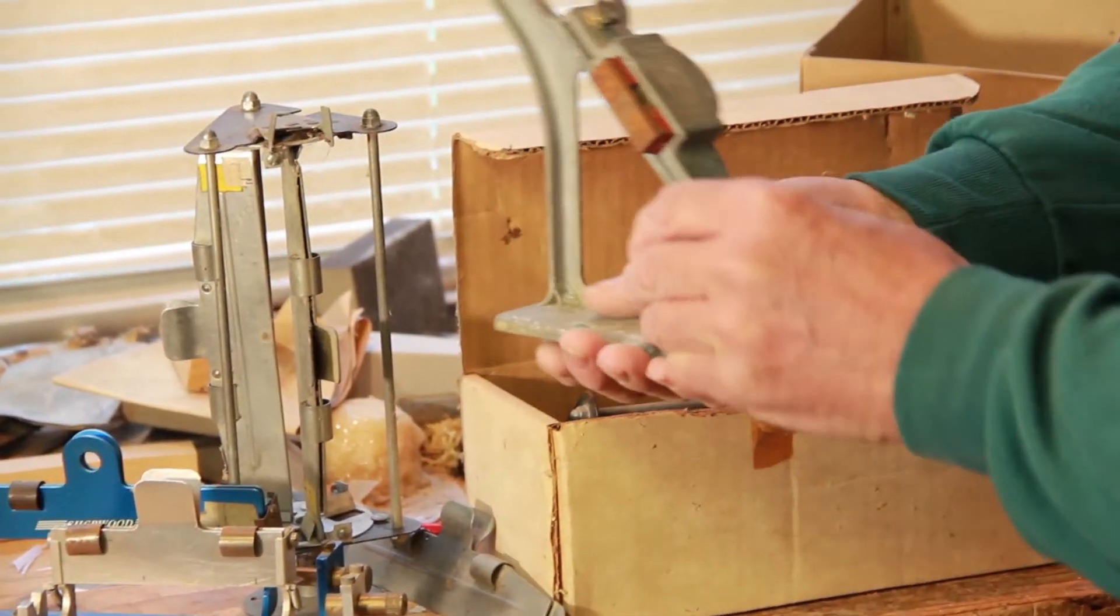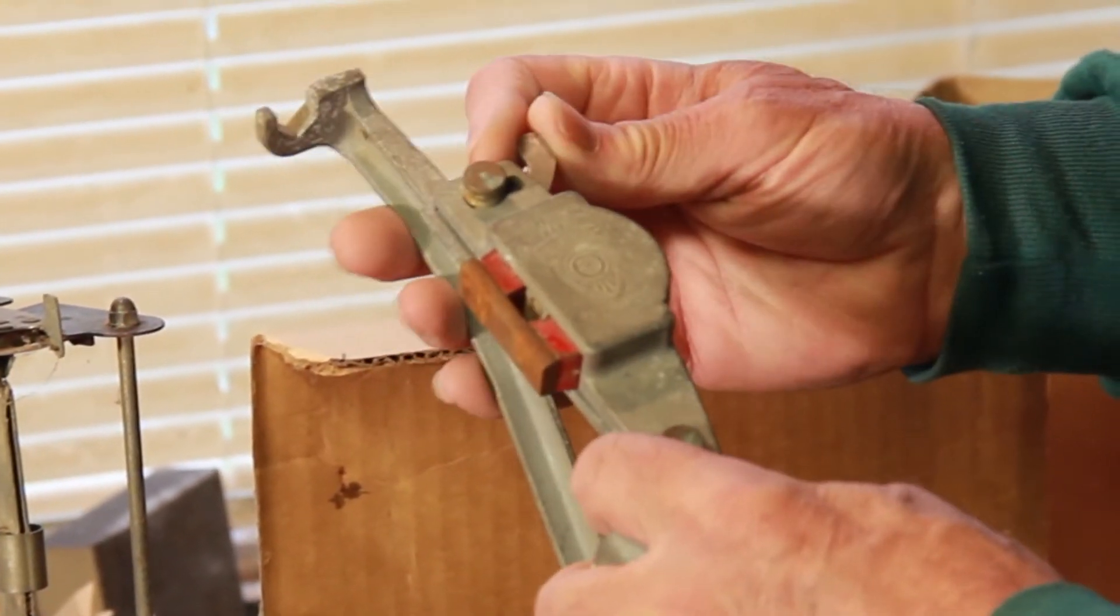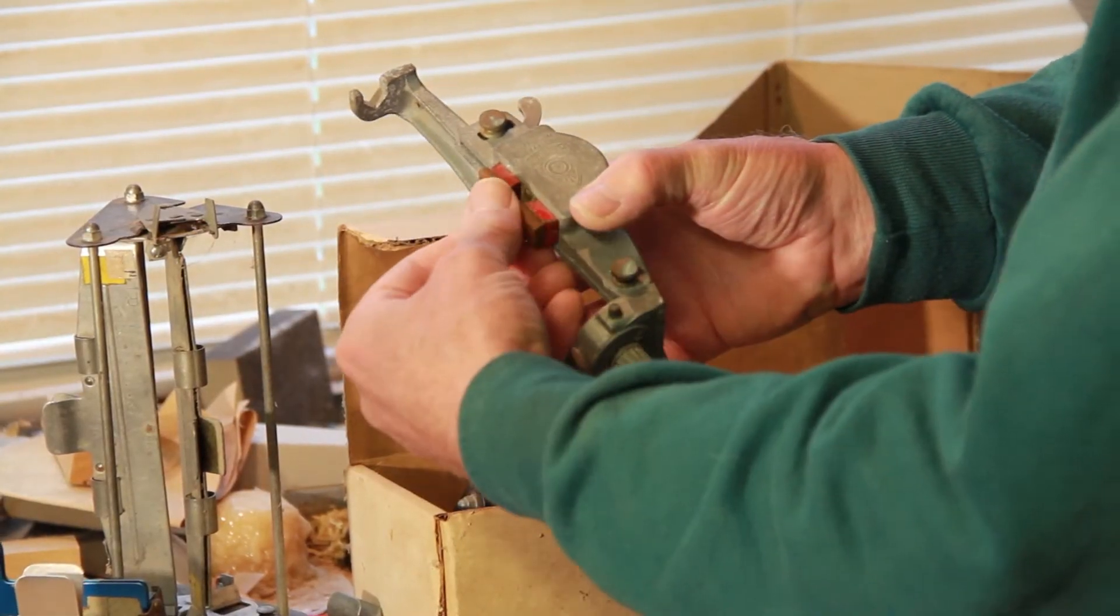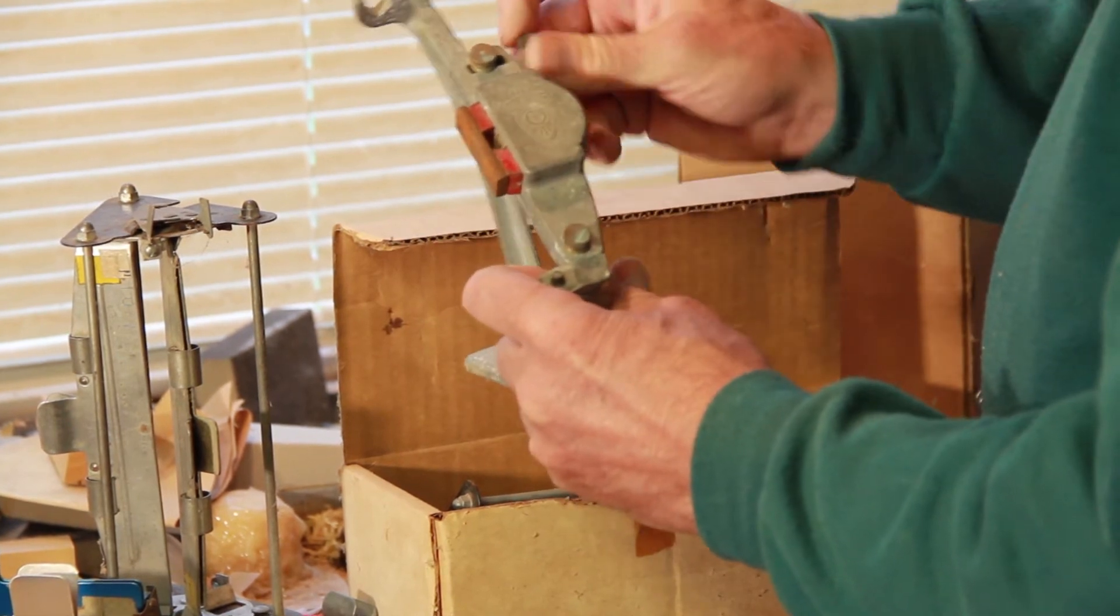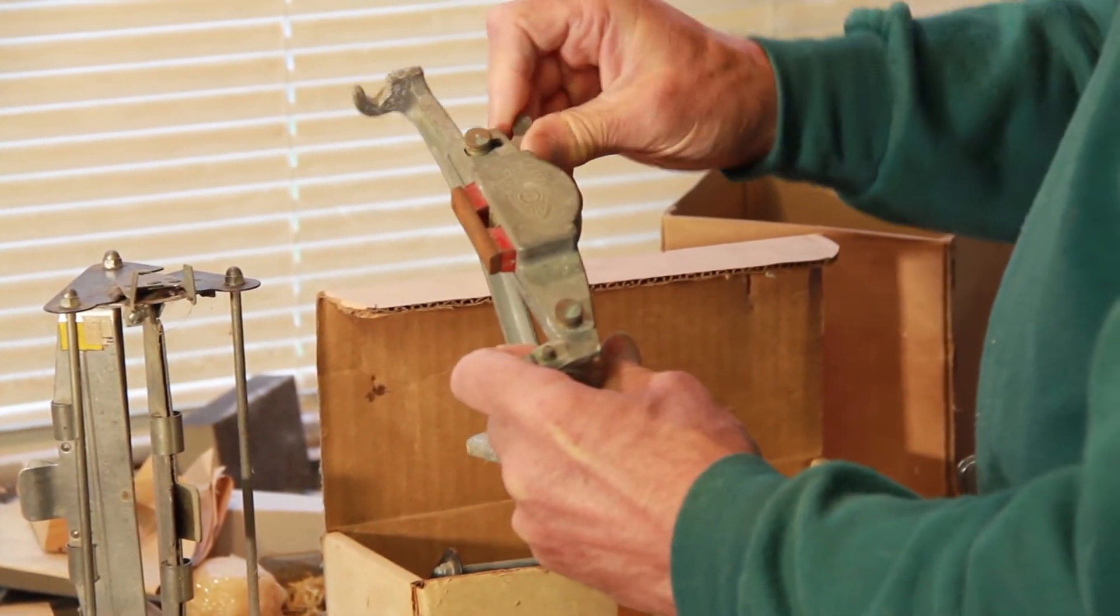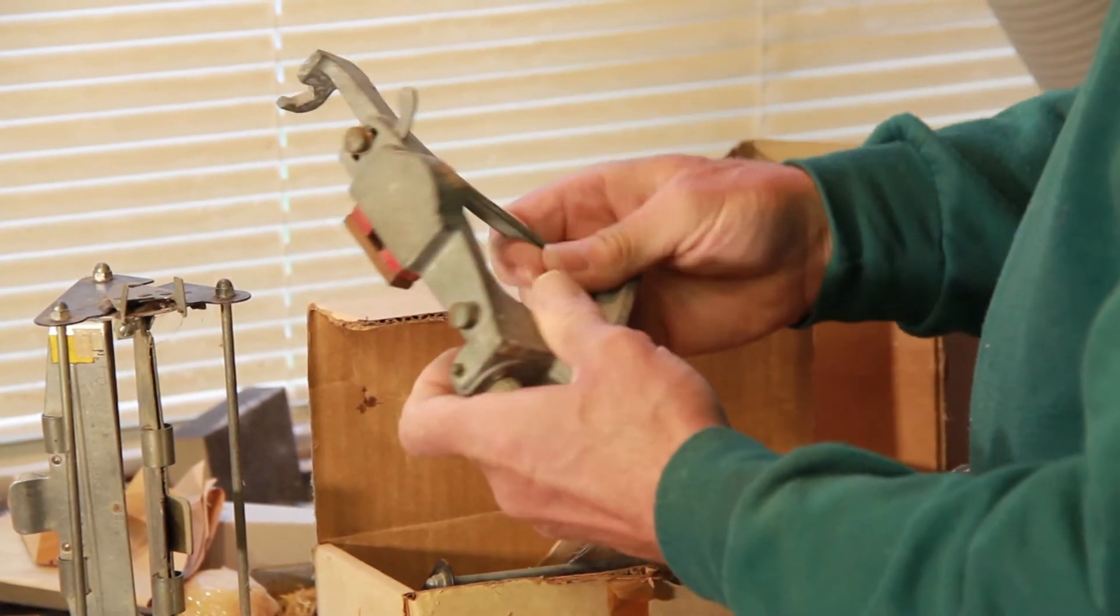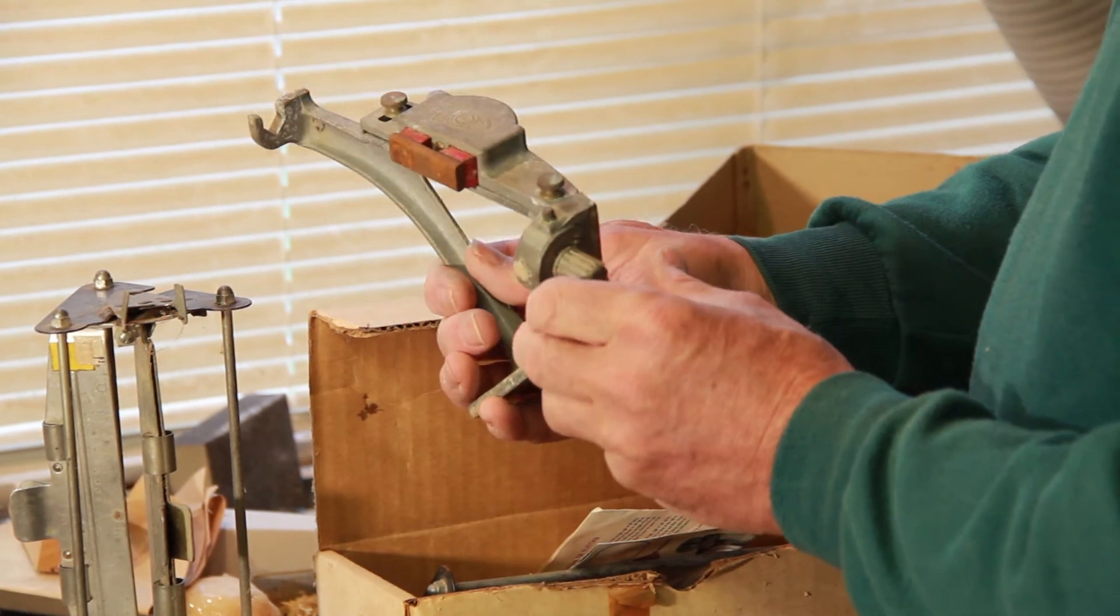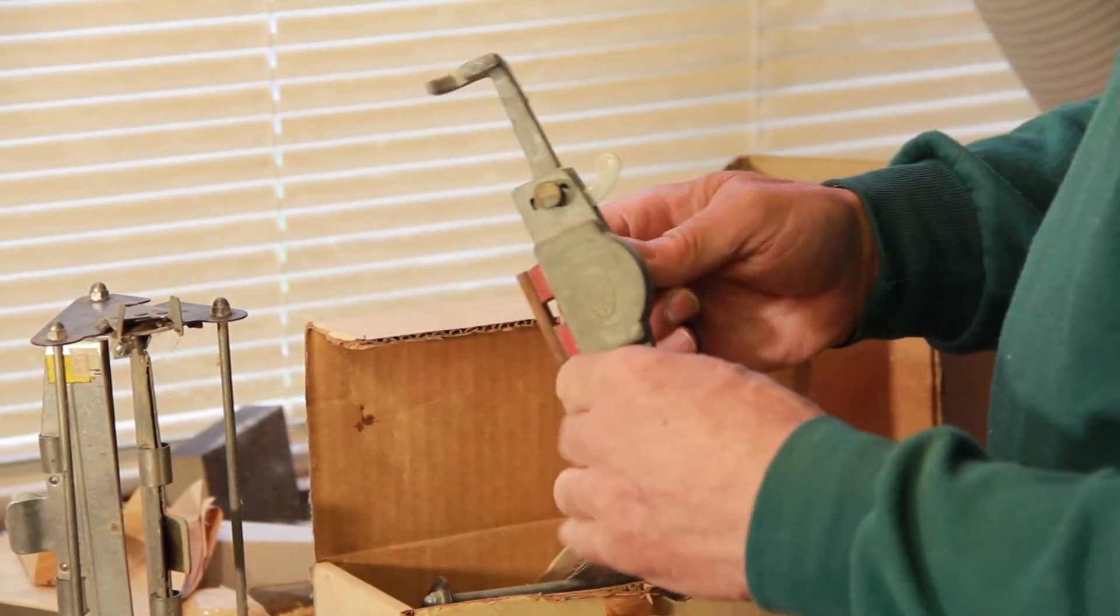The next one along is the American Bitsenberger jig, very early model. It seems to be missing its clamp which was attached with a magnet. You can adjust the angle of the fletches with this little lever here, and the Bitsenberger was regarded as the Rolls Royce of fletching jigs—very sturdy item.